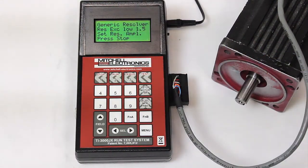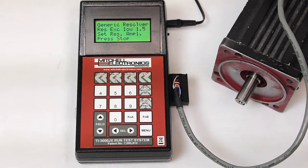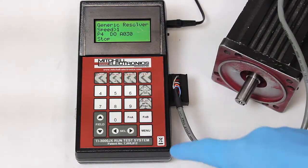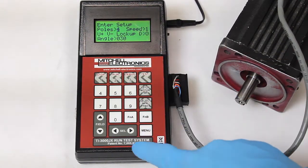If the vector level is not within the two to three volt range, the TI-3000JX will prevent you from running the motor. Press the Stop button and enter the setup menu to adjust the excitation settings.